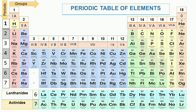The elements of the 3rd period are known as typical or representative elements. The 4th period has 18 elements with atomic numbers 19 to 36; it is a long period. The 5th period has 18 elements with atomic numbers 37 to 54; it is also a long period. In the 6th period, there are 32 elements having atomic numbers 55 to 86; it is called the longest period.